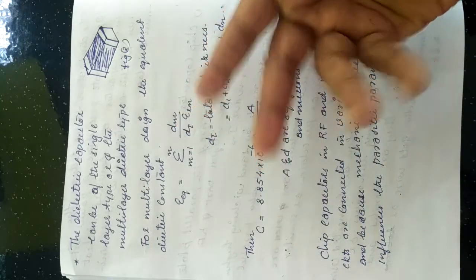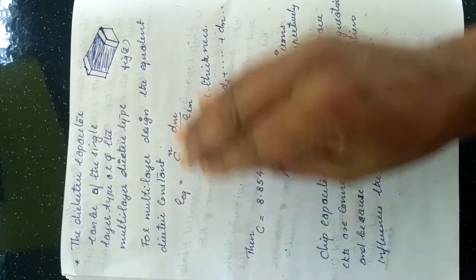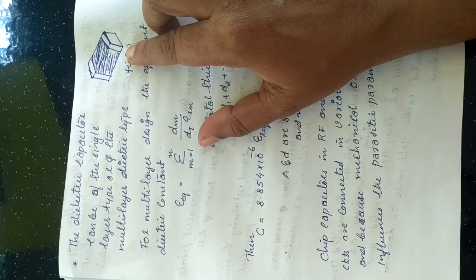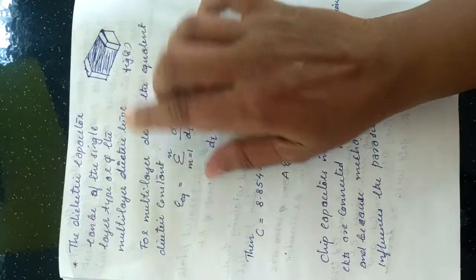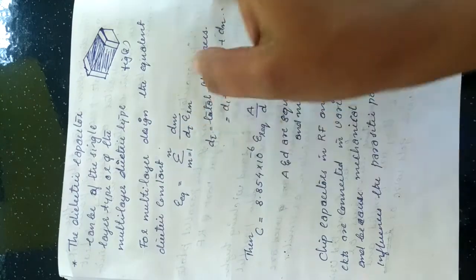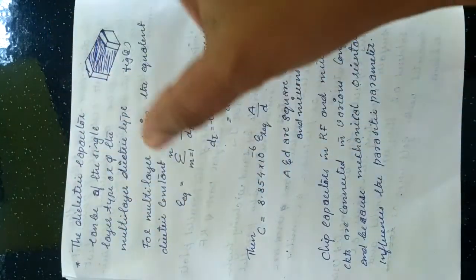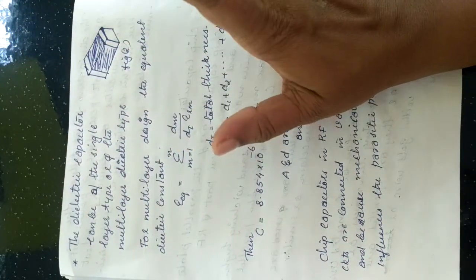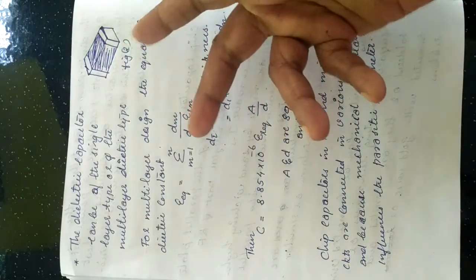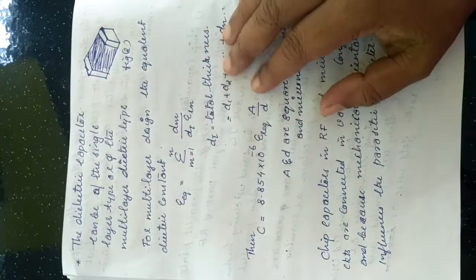We can use this chip capacitor in the form of a single layer type or a multilayer dielectric type. For a single layer design, we always get a single value of capacitance, and the dielectric constant will have a single value.